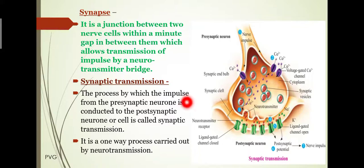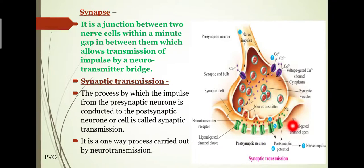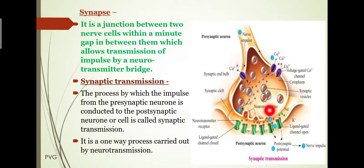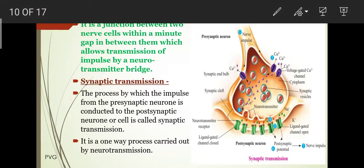The process by which the impulse from the pre-synaptic neuron is conducted to the post-synaptic neuron or cell is called synaptic transmission. It is a one-way process which is carried out by neurotransmission. Next we study the types of synapse.